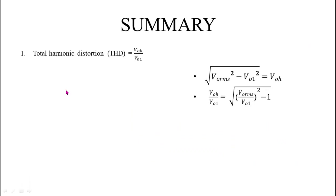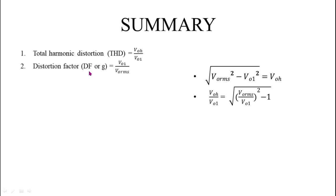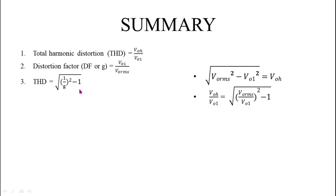Now we will look at some other important expressions. First is Total Harmonic Distortion (THD), which equals V₀H / V₀₁, where V₀H is the harmonic voltage and V₀₁ is the RMS value of the fundamental component. Distortion Factor (DF), also written as G, equals V₀₁ / V₀RMS, where V₀₁ is the RMS value of the fundamental component and V₀RMS is the RMS value of the output voltage. THD can also be written as √(1/G² − 1).